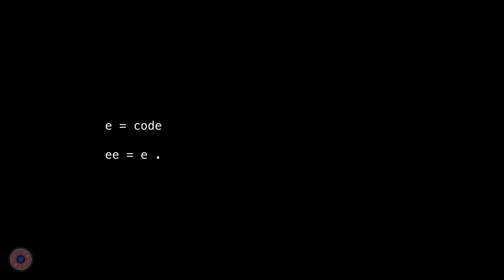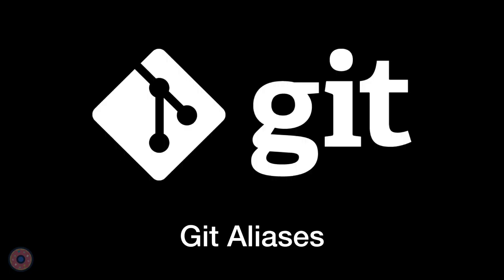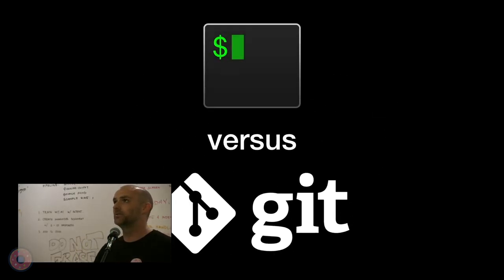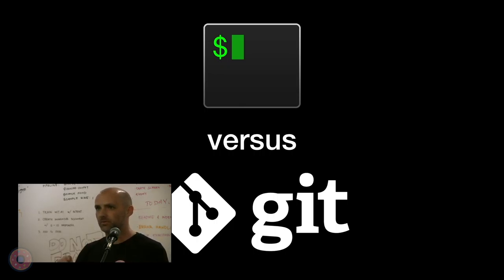One of my favorite aliases is creating one for your editor of choice — mine happens to be code. And then creating an alias to very quickly open your current folder in that editor. The nice thing about setting up an alias for your code editor is that you can easily change editors at any time. So if you want to switch to Sublime, or God forbid, Atom, you can just change your alias and continue typing the same thing.